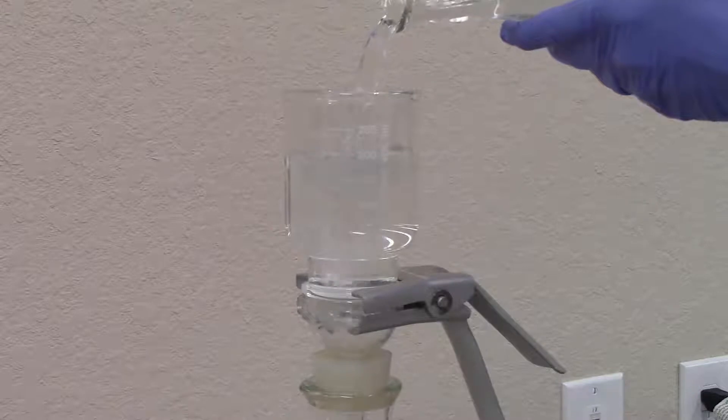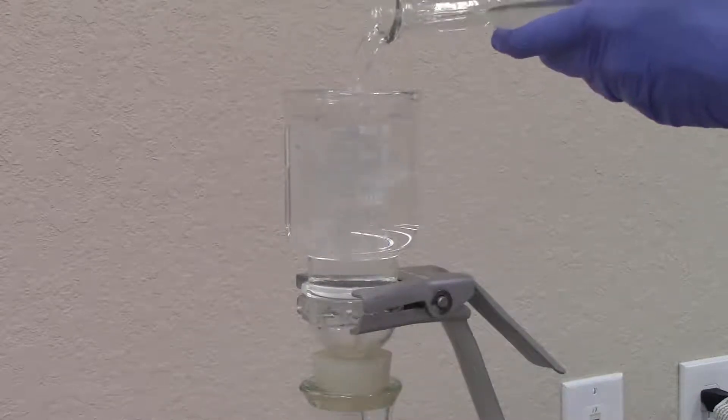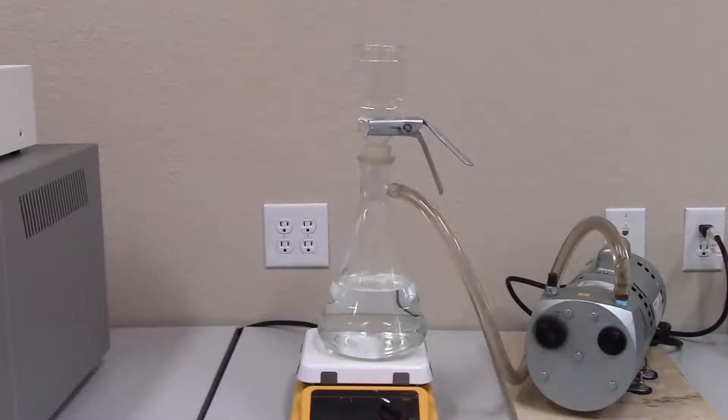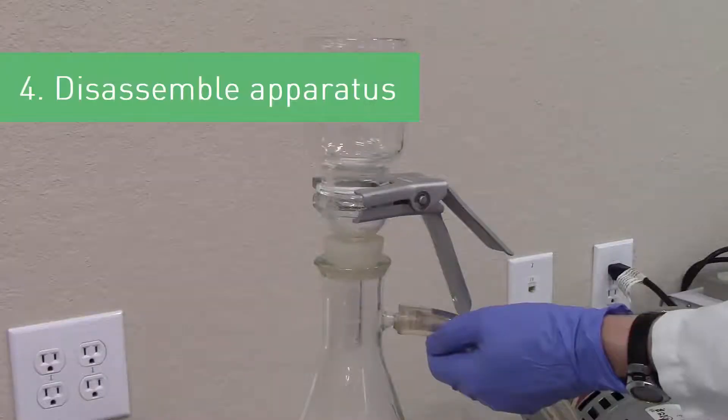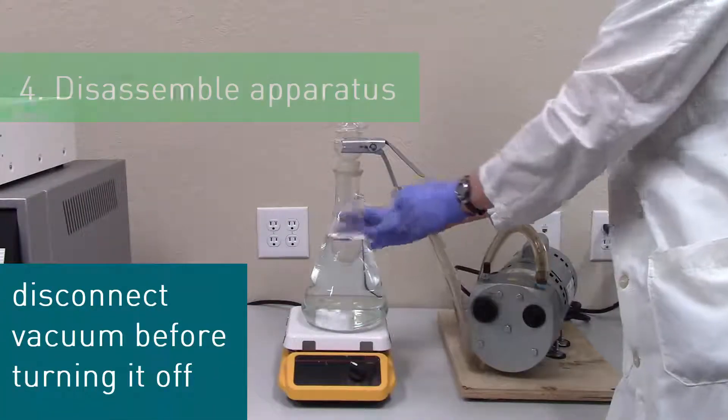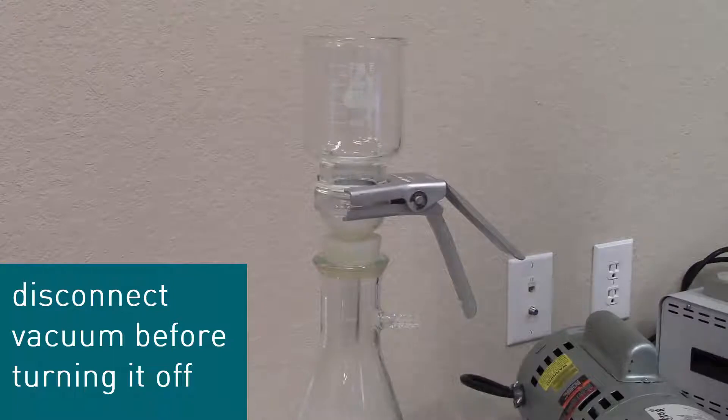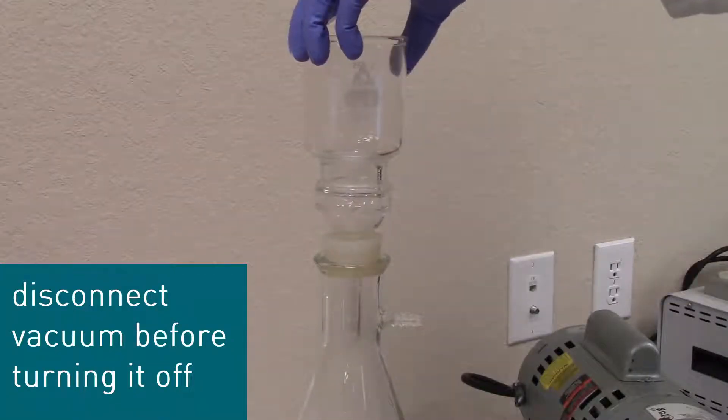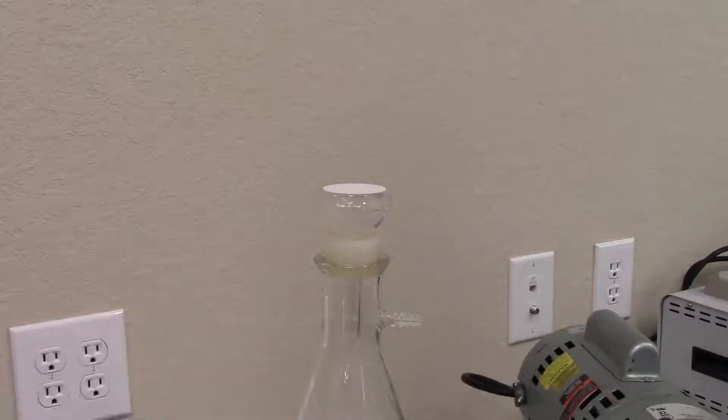Continue to add solution to the filter cup until the entire batch has been filtered. Make sure the stir bar is moving and agitating the filtrate as it accumulates in the flask. Once filtration is complete, disconnect the vacuum hose from the filtration flask and then immediately shut off the vacuum. This prevents anything that may have been sucked into the vacuum hose from contaminating your fresh mobile phase.